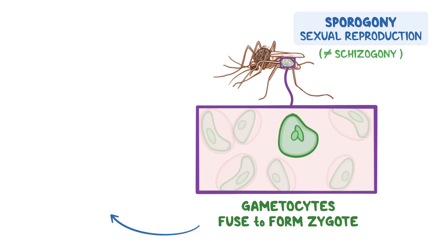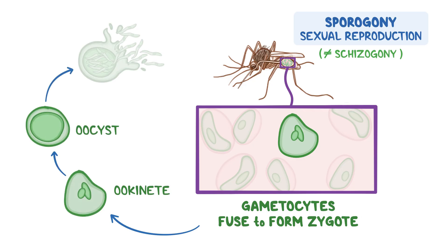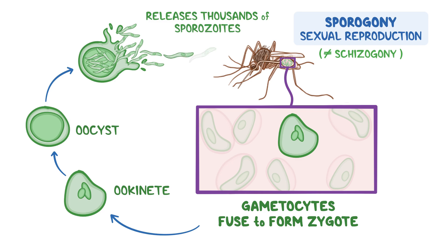The zygote then goes on to develop further. It becomes an ookinete, and then an oocyst that ruptures in the mosquito's gut, releasing thousands of sporozoites, which navigate their way into the mosquito's salivary gland in order to repeat the cycle all over again.